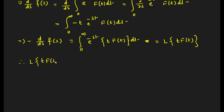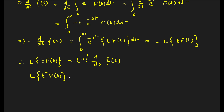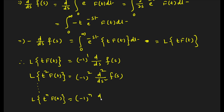Therefore, L{t·f(t)} = (-1)^1 · d/ds F(s). This is what we get when we differentiate once. Similarly, if we multiply by one more t — that is, for t²·f(t) — the right-hand side becomes (-1)^2 · d²/ds² F(s). In the same way, if we multiply by t n times, for t^n · f(t) the result is (-1)^n · d^n/ds^n F(s). This is a simple and interesting proof.